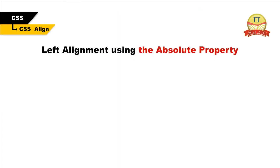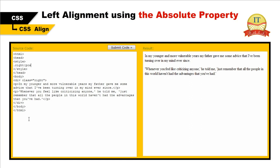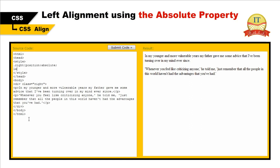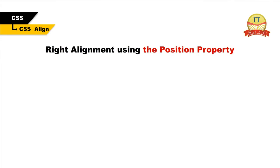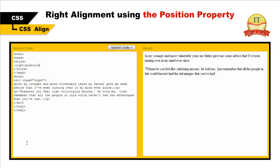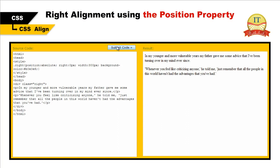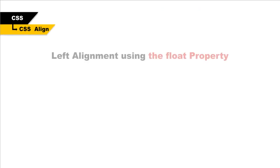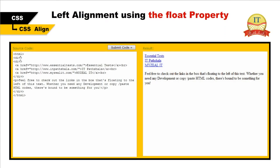We can also perform left alignment using the absolute position property, right alignment using the position property, and left alignment using the float property. Examples are provided for each of these alignment approaches.